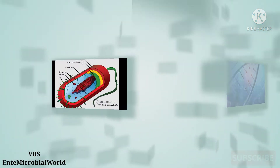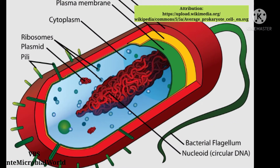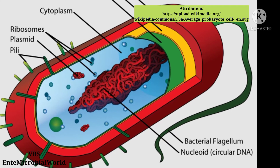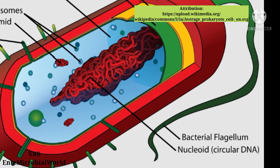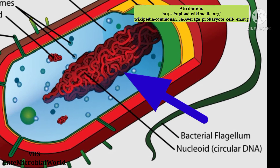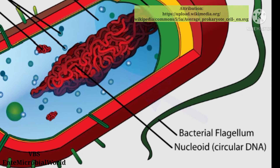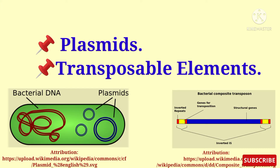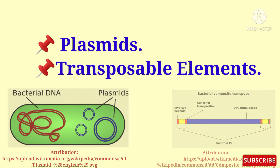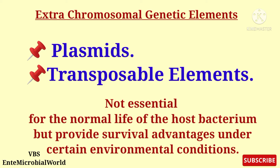We know that DNA is the bacterial genetic material. The DNA of most bacteria is contained in a single circular molecule called the bacterial chromosome. Bacterial chromosomes are located in a region called nucleoid. In addition to chromosomal DNA, most bacteria possess extra chromosomal genetic elements known as plasmids and transposable elements. These are not essential for normal life of the host bacteria but provide survival advantages under certain environmental conditions.